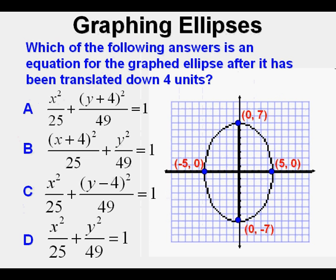Here's the first of four problems we'll look at today. We're going to solve each problem first by knowledge of conic equations and ellipses, and after that we'll look at our graphing calculator to help us out. Which of the following answers is an equation for the graphed ellipse after it's been translated down four units? The first thing is to read carefully what we're trying to do, and that is to translate or shift the ellipse down four units. Does that shift involve a change in x or a change in y?